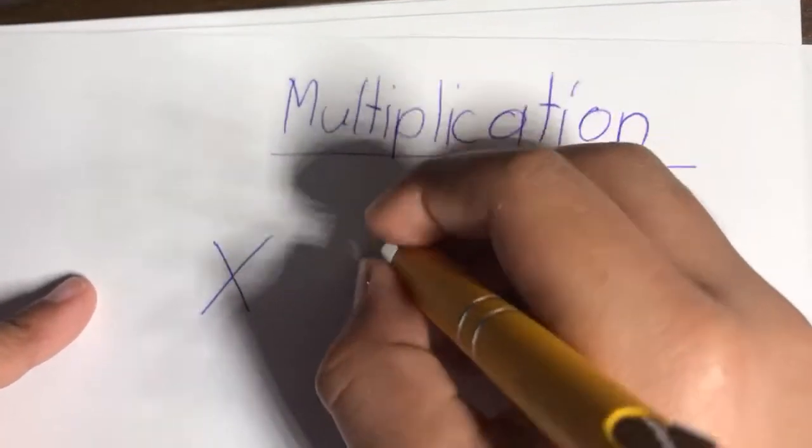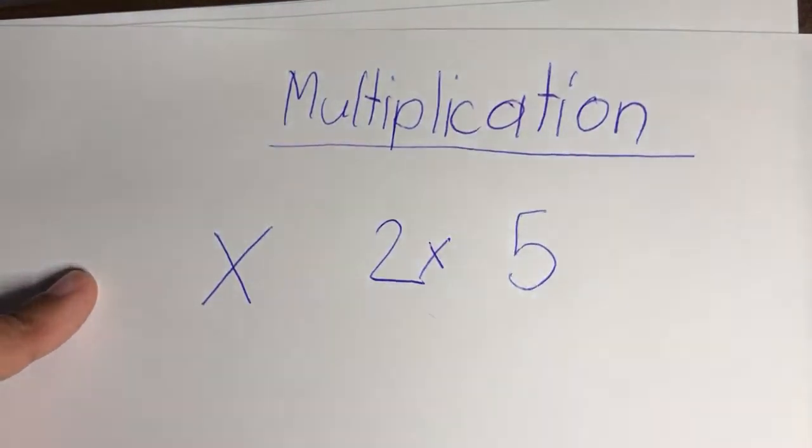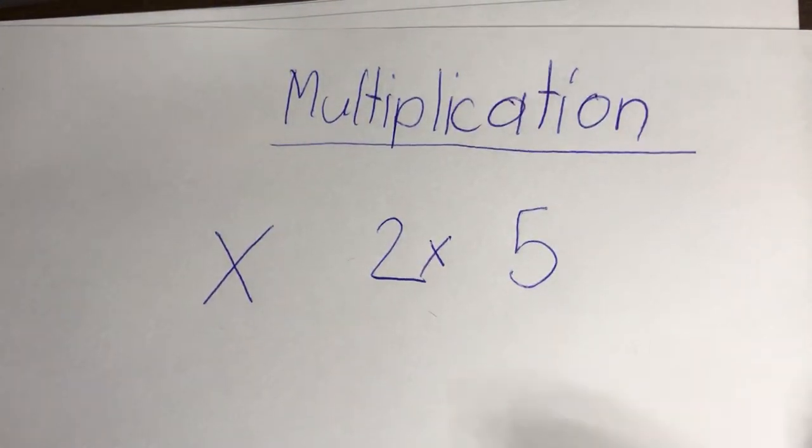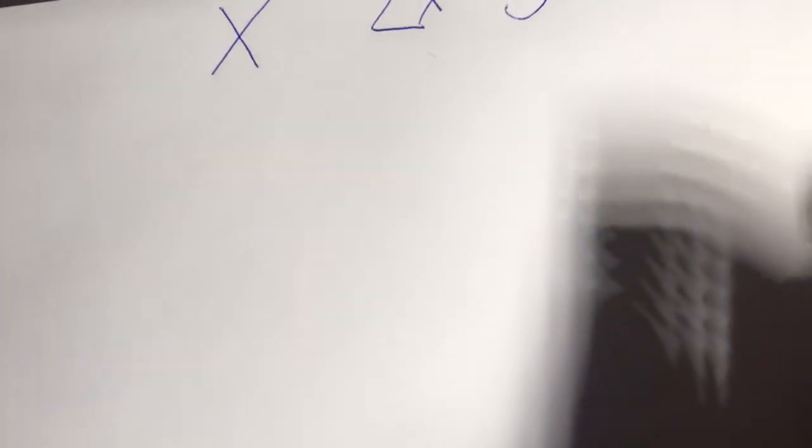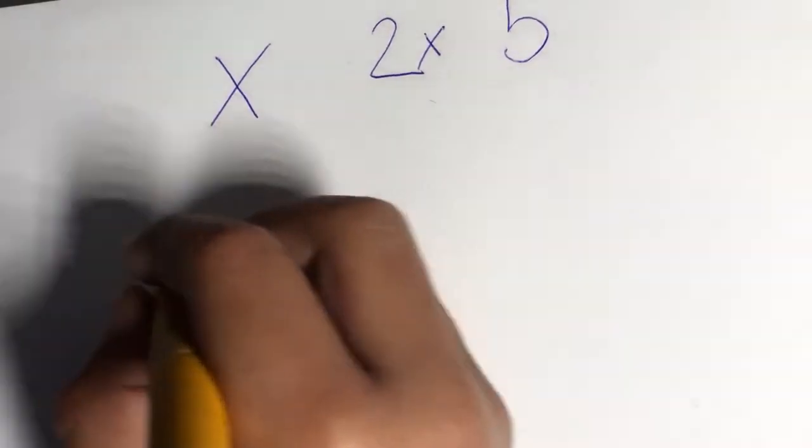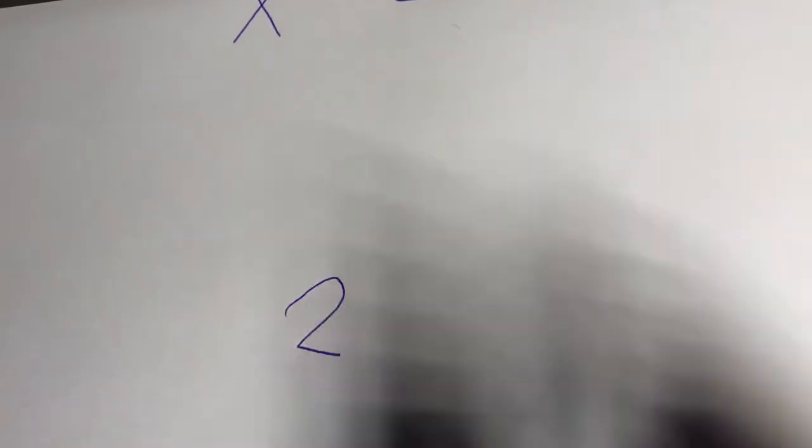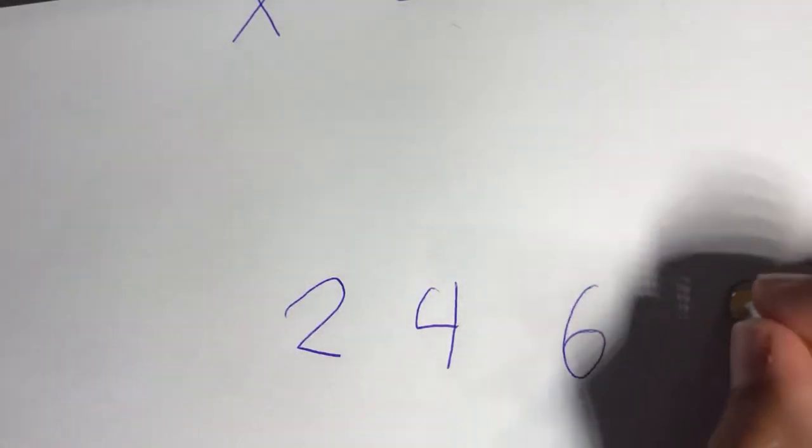Two times five. If you want to figure it out, you guys know how to count by twos. You have to count by twos five times. So two, four, six, eight, ten.